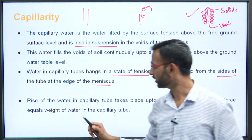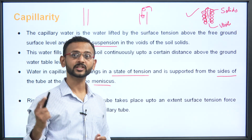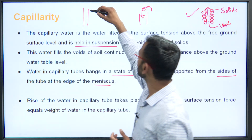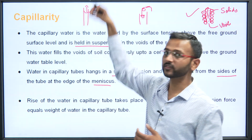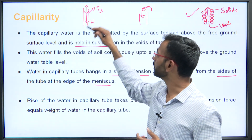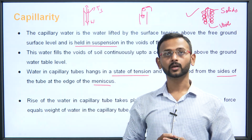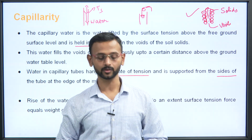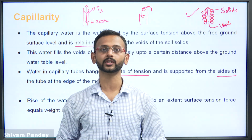The rise of water in a capillary tube takes place until the surface tension force equals the weight of the water in the capillary tube. The surface tension force lifts the water upward while the water weight acts downward. How this balance occurs will be covered in the next lecture on capillarity.